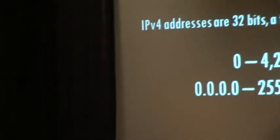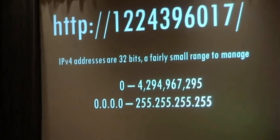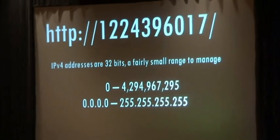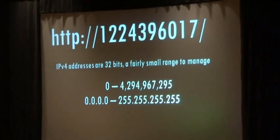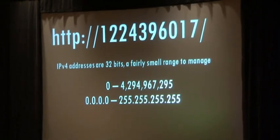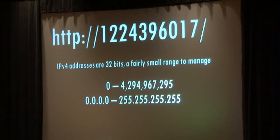If you look at any IPv4 address, it's a 32-bit number. It starts at zero and goes to 4.2 billion. It's a pretty finite space — nothing magical about IP addresses. They're pretty easy to manage. If you're looking at the internet as a to-do list, you start at zero, go to 4.2 billion, and then you're done. You keep doing that for the protocols and services.